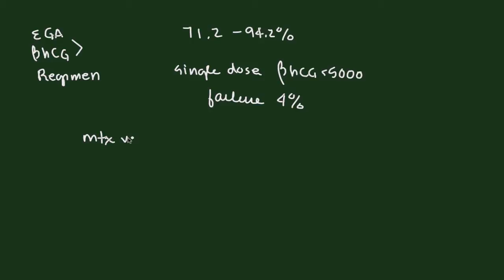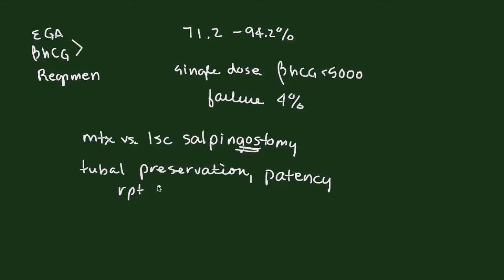So, if you look at methotrexate versus laparoscopic salpingostomy, and notice I said salpingostomy, so this is tubal sparing surgery. Ultimately, their outcomes in terms of tubal preservation, patency, repeat ectopic pregnancies, and future successful pregnancies, ultimately these are the same if you look at them according to these measures.